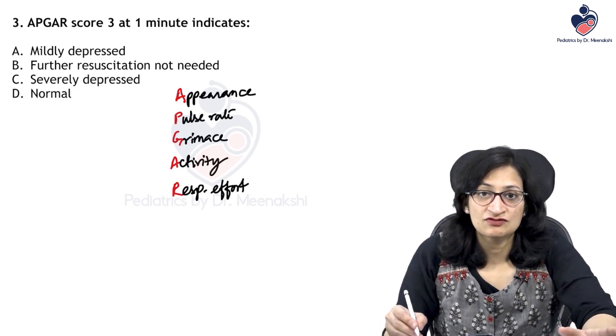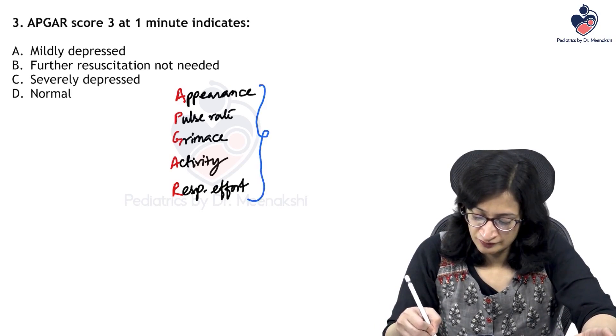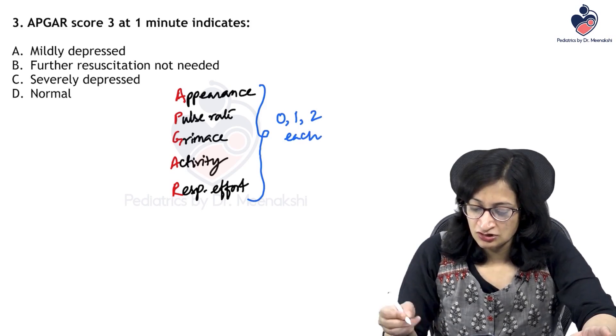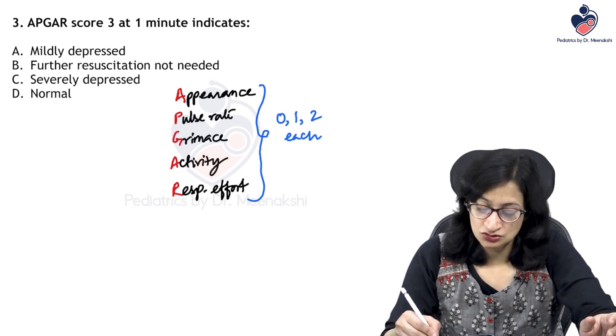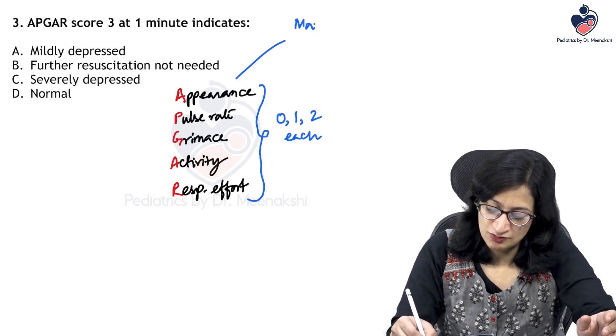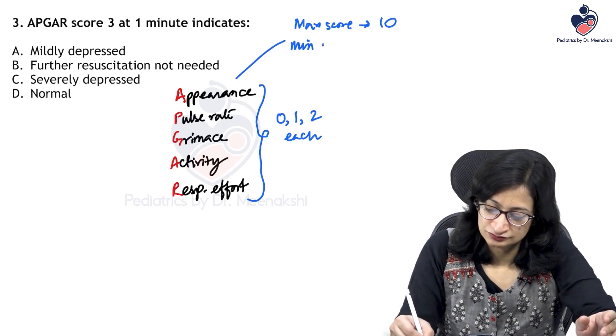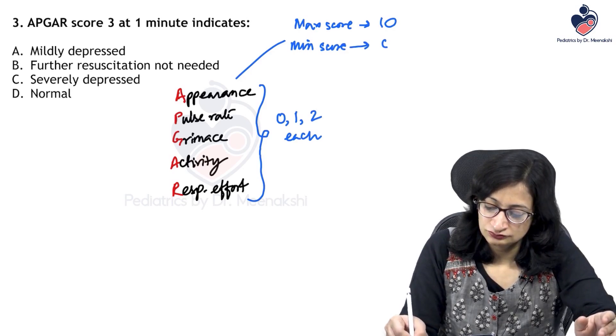Each of these 5 components can be given a score of 0, 1 or 2 each. So the total score in APGAR score, the maximum possible score is 10 and the minimum score is 0.